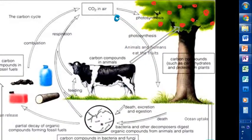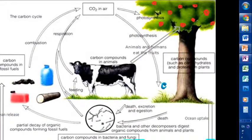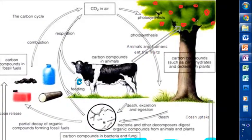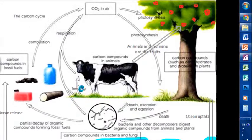Carbon is taken into plants during photosynthesis. Animals and humans eat the fruits and feed on the grass, forming carbon compounds in their bodies.